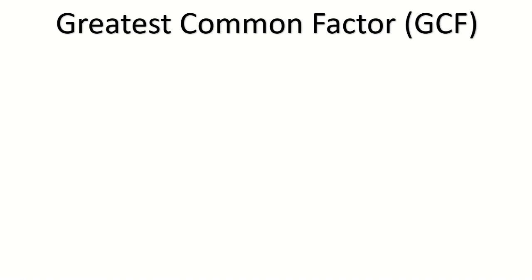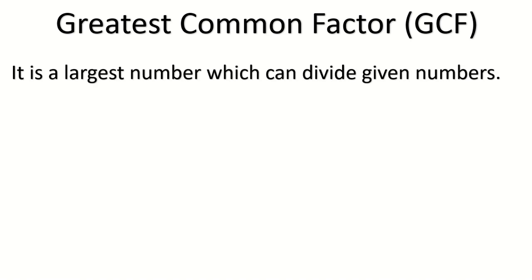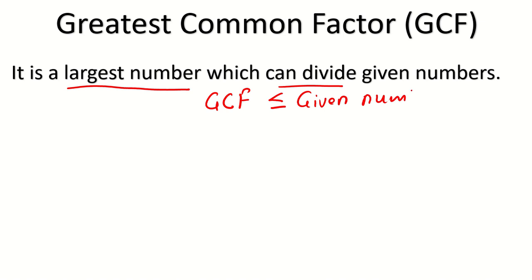Let's come to the main point: Greatest Common Factor or GCF. GCF is the largest number which can divide the given numbers. So the GCF of any numbers will be less than or equal to the given numbers — it cannot be bigger than the given numbers. Make sure you double-check your answer to verify it divides all the numbers.